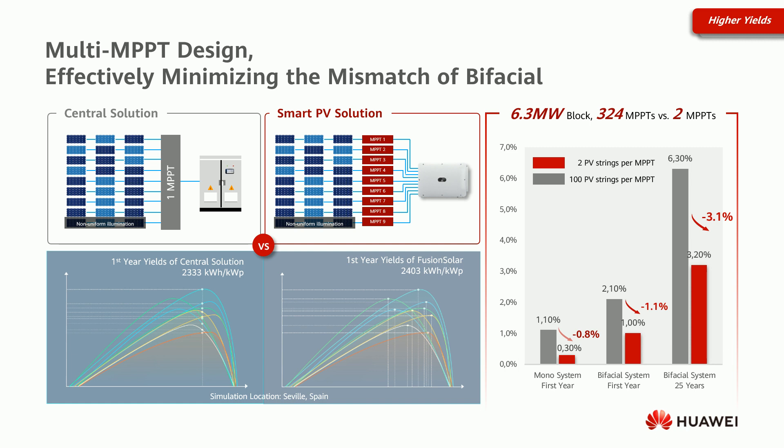For a central solution, if we suppose there are more than 100 strings connected to one MPPT, for our Smart PV solution we have nine MPPTs with 18 strings — so two strings per MPPT. We can see from the simulation that in order to maximize the produced energy, we have to find the maximum power points of these curves. But with one MPPT, this is not possible.